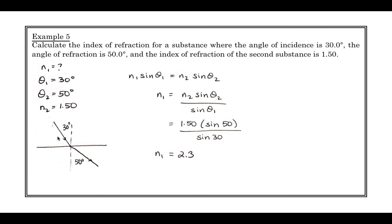And so n1, of course, is much bigger than n2, as we expected, n1 bigger than n2, because we're going from something more dense to something less dense, and we're bending away. So the index of refraction is 2.3, and that is your crash course on refraction.